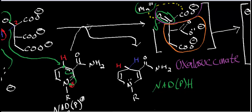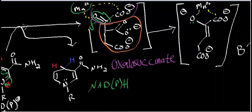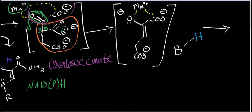At this point, decarboxylation occurs. The lone pair on the oxygen of the carboxyl group at position 3 forms a pi bond, causing electrons to shift and generating an enolate. The enolate carries a full negative charge, and along with the carboxylate group, it is stabilized by the manganese ion.